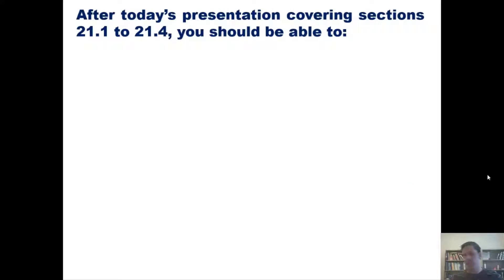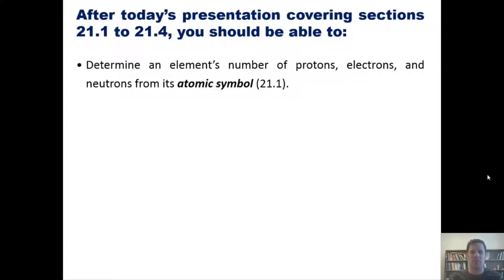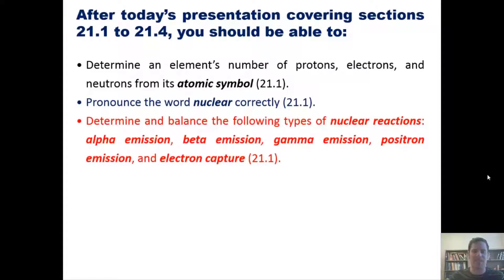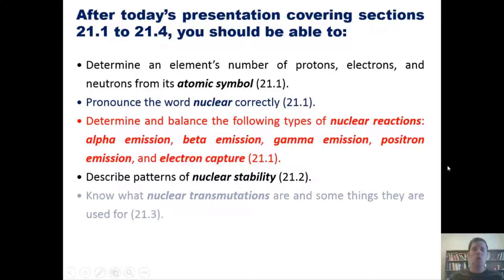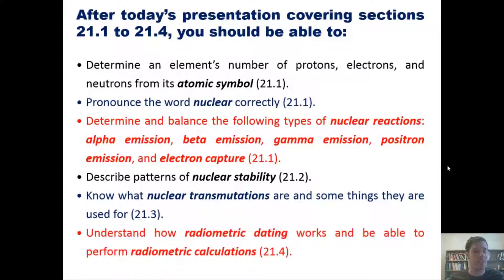After this series of lectures covering sections one through four of chapter 21, you should be able to: determine an element's number of protons, electrons, and neutrons from its atomic symbol; pronounce the word nuclear correctly; determine and balance nuclear reactions including alpha, beta, gamma, and positron emission and electron capture; describe patterns of nuclear stability; know what nuclear transmutations are; and understand how radiometric dating works.